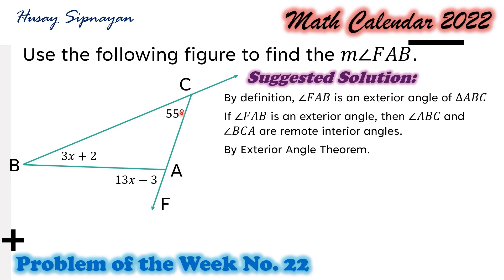Hence, from the figure and by the Exterior Angle Theorem, we can form the equation: the measure of angle FAB equals the measure of angle ABC plus the measure of angle BCA.